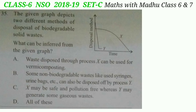Question 35: The given graph depicts two different methods of disposal of biodegradable solid waste. What can be inferred from the given graph? According to the graph, process X is composting and process Y is incineration. The correct answer is option D — all of these.